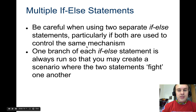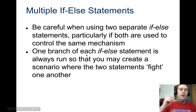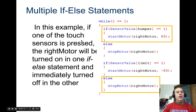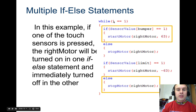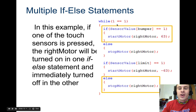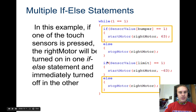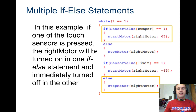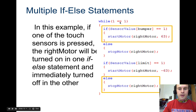If you want to use two separate if-else statements, you've got to be really careful that they don't conflict. One if might turn something on and the other else might turn it off. In this example, if one of the touch sensors is pressed, the right motor is turned on in one if-else statement and turned off in the other. Here's a loop: while one is exactly equal to one. How often is one equal to one? All the time. So this loop will run forever. You're going to use those kinds of loops a lot — when you want your program to run indefinitely, waiting for inputs and sensors.